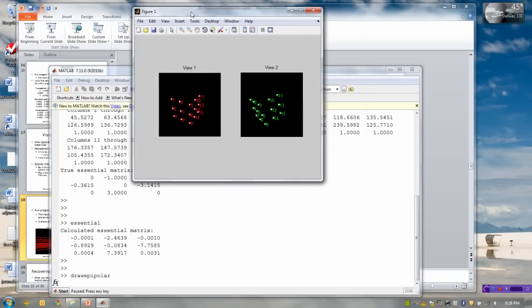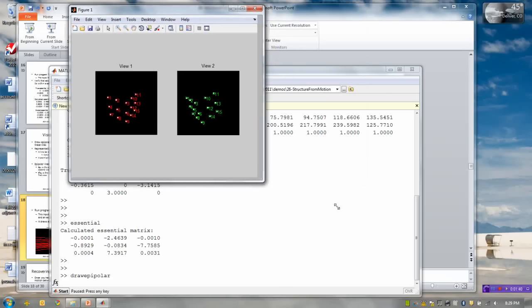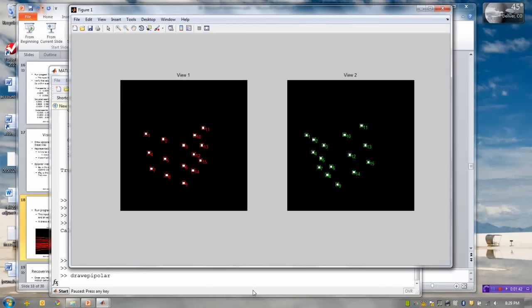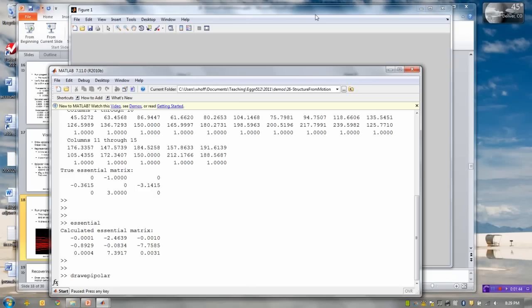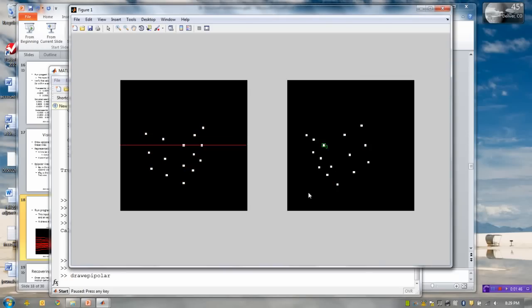So let me just expand this a bit. Here's the two sets of points, and when I hit return here it will in turn draw each of the epipolar lines and the corresponding point in the other image. So we can see the points lie on the line that they're supposed to.